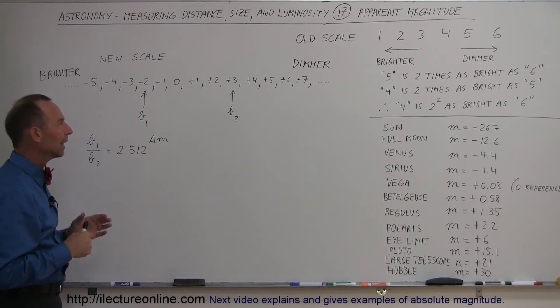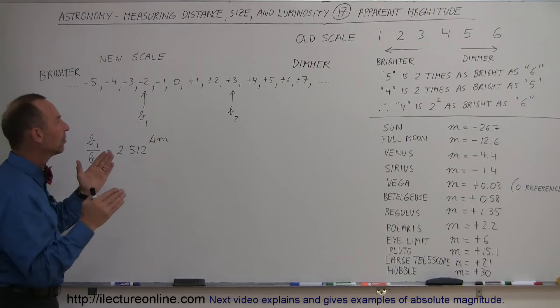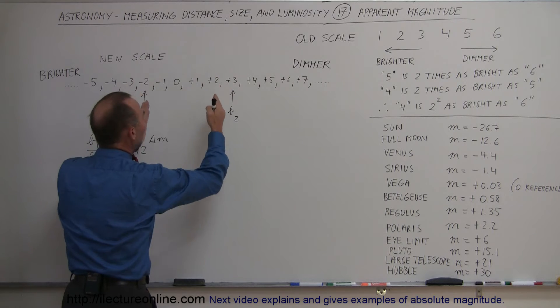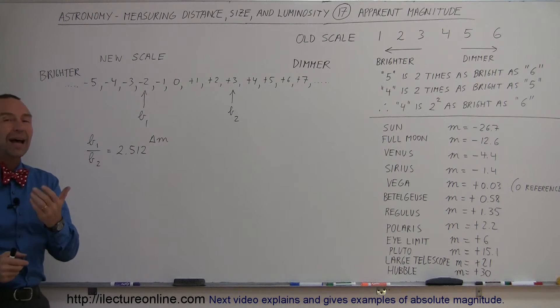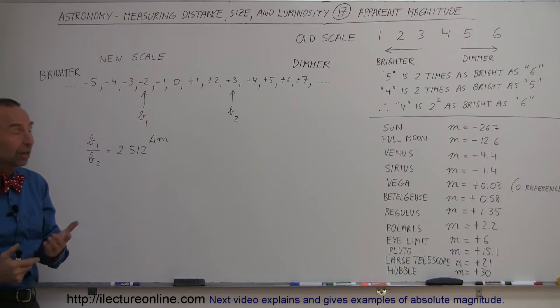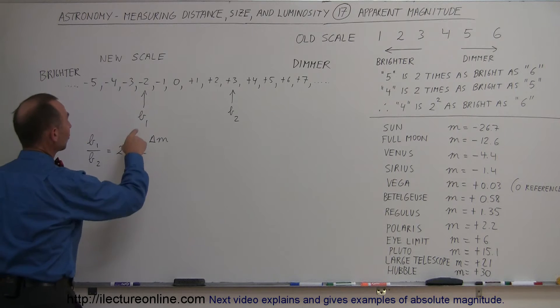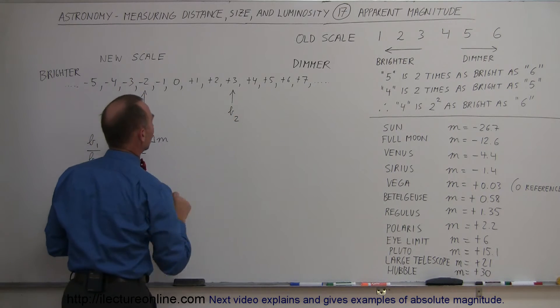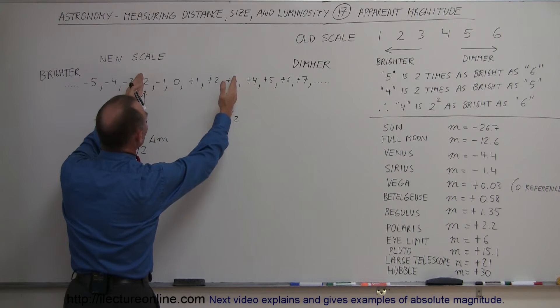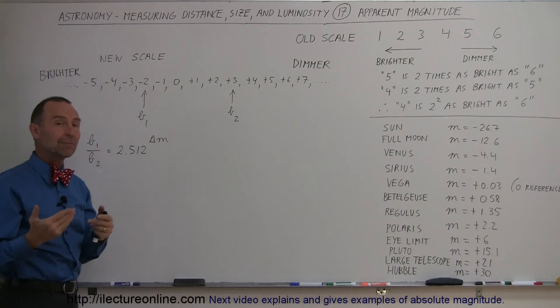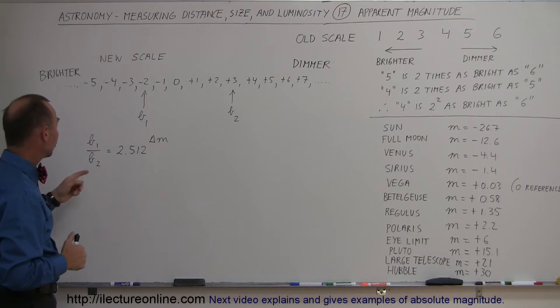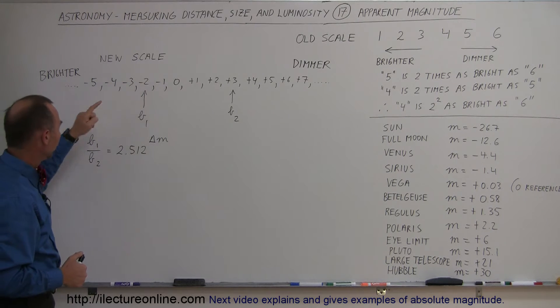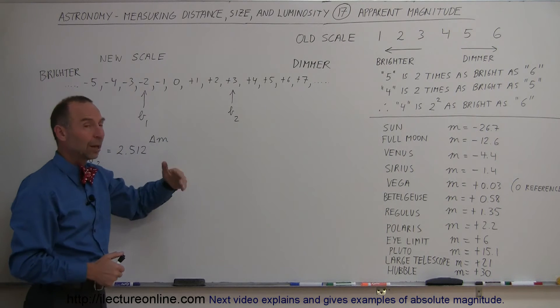How did this scale work? They had it in such a way that a difference of five magnitudes represented a difference of a hundred times the brightness in the luminosity. For example, if one star has magnitude minus two, and another star has magnitude plus three, the difference between those two is a total of five. The ratio of the brightness of star one versus the brightness of star two, b1 divided by b2, is equal to 2.512 to the difference in the magnitudes.